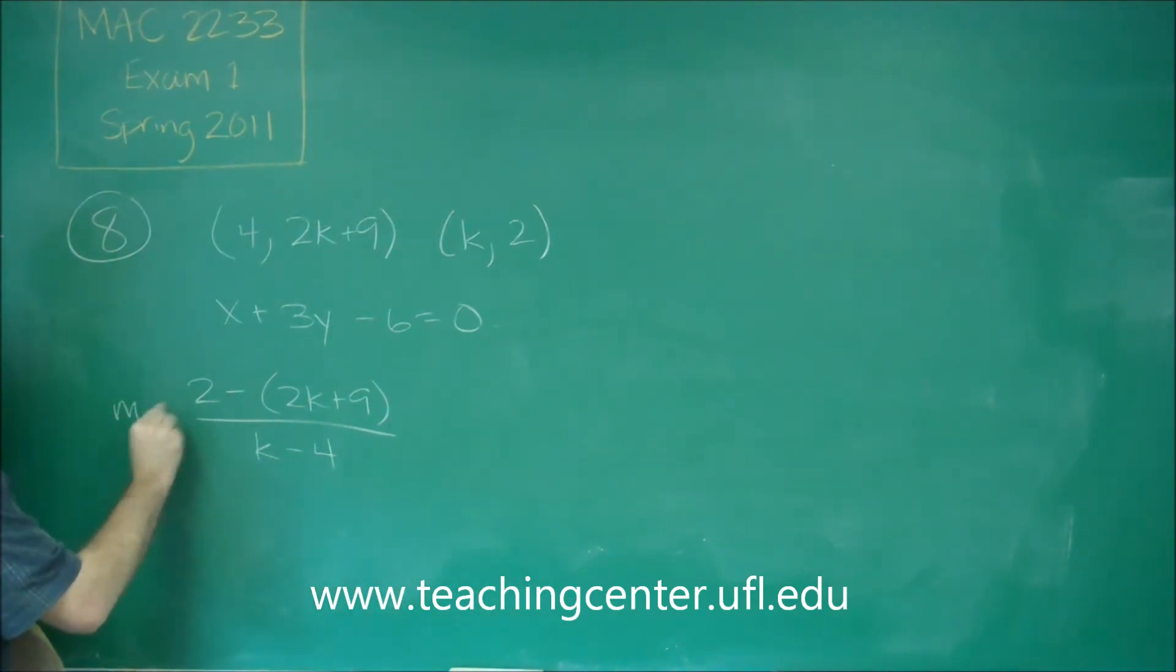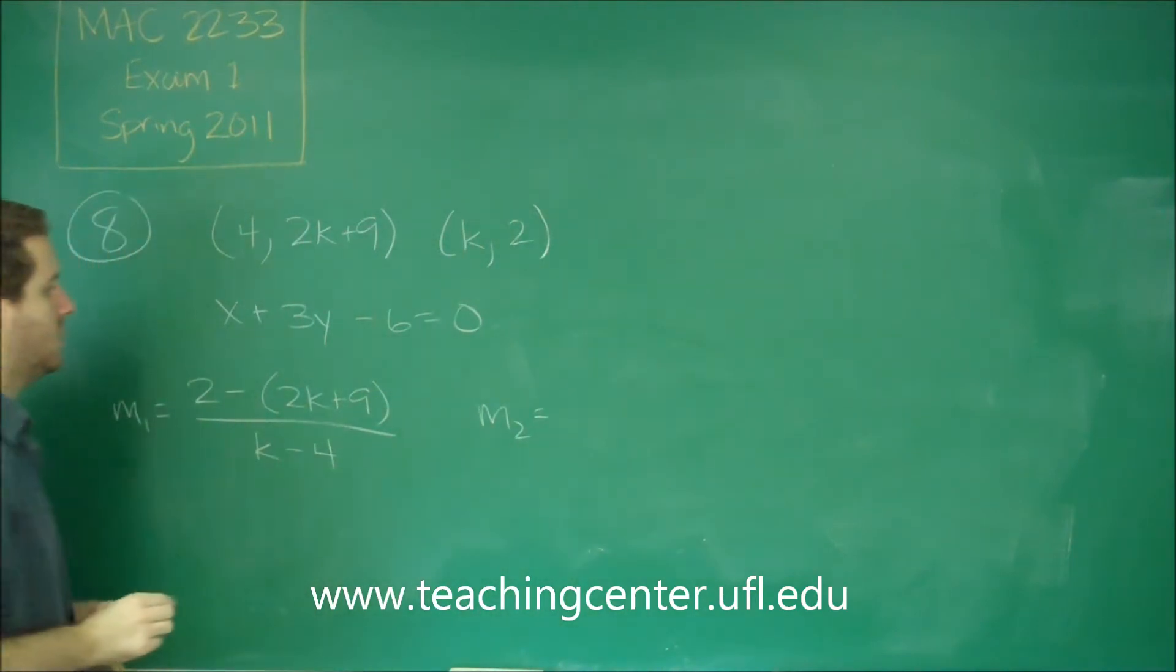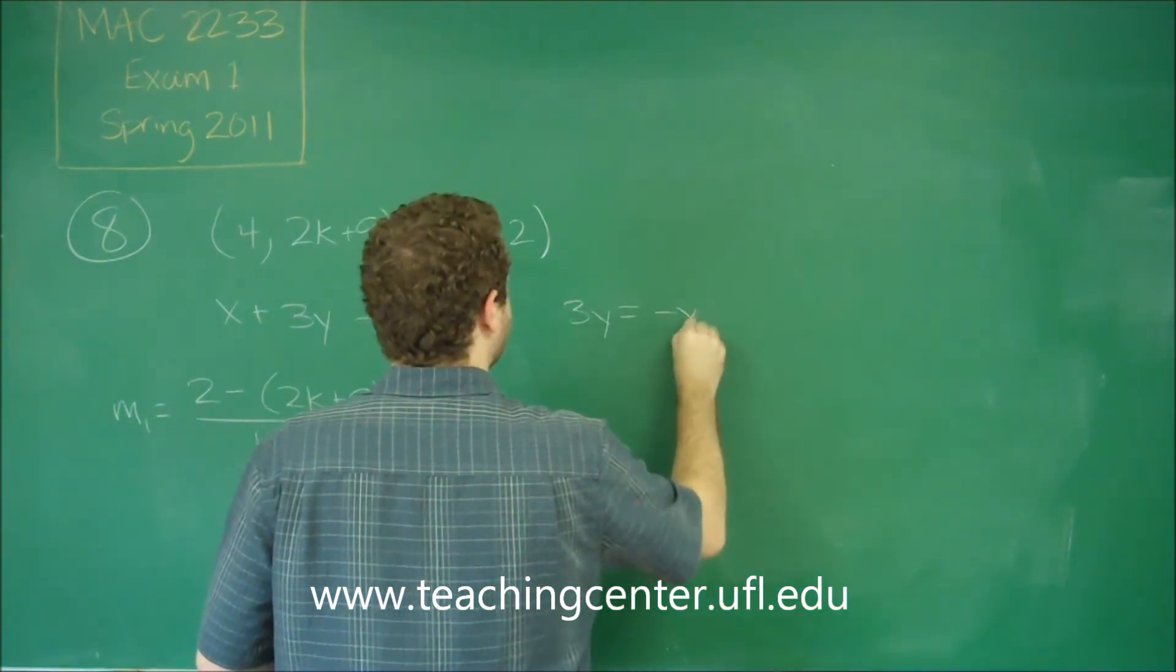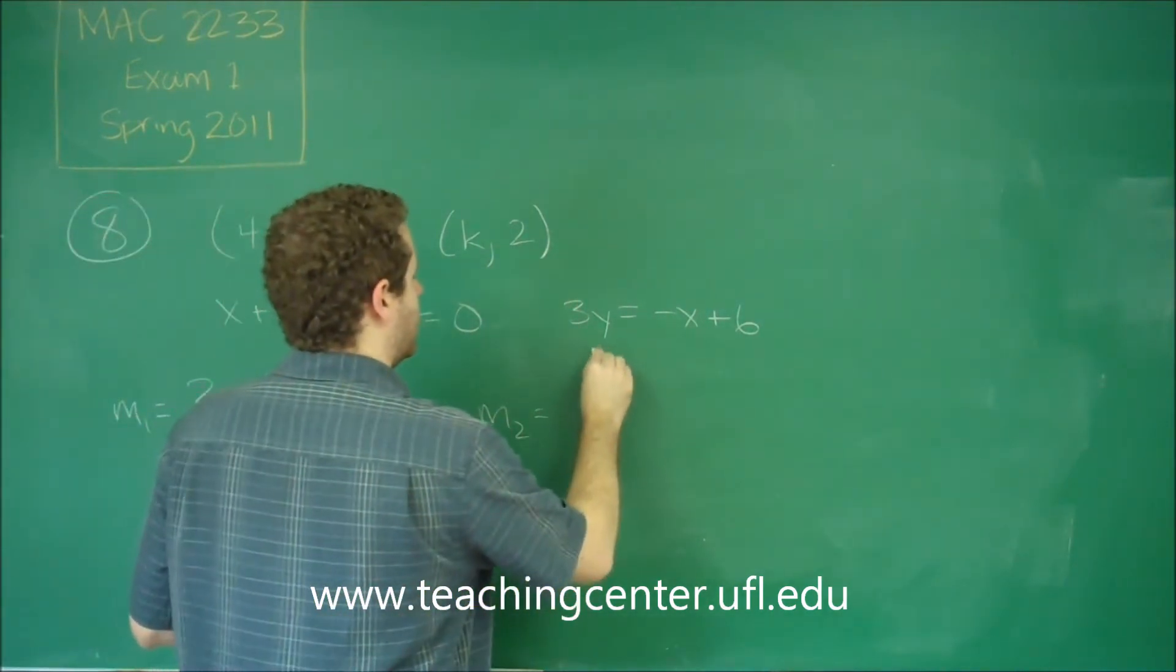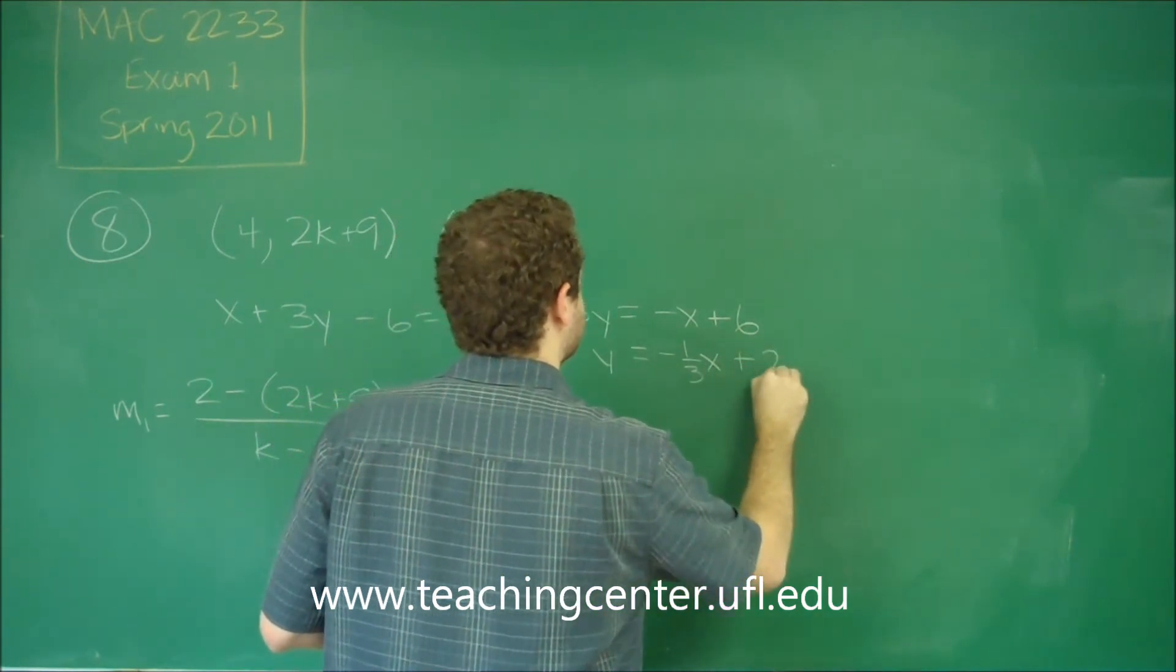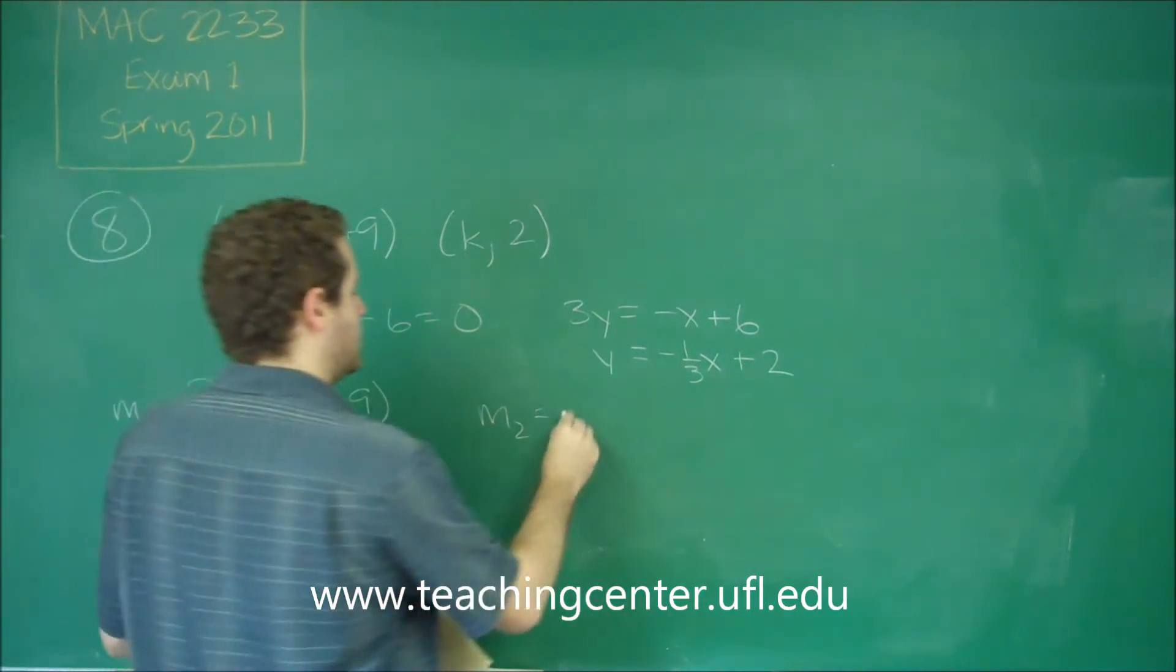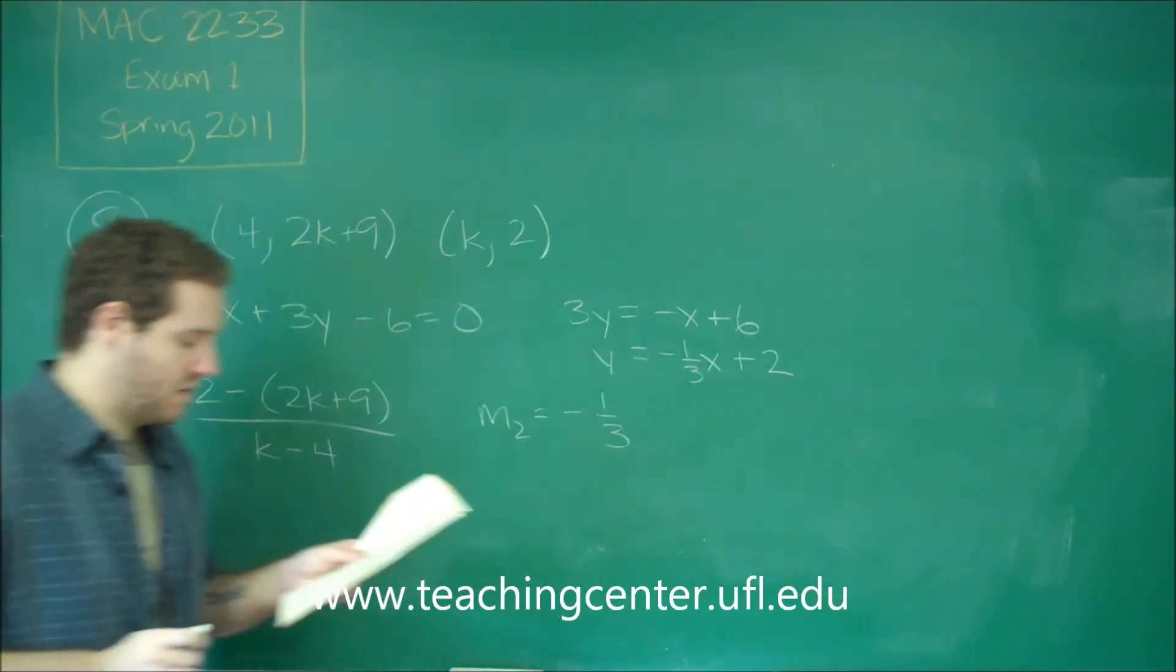Let's call this M1. M2 we can figure out by putting this into Y = MX + B form. In rearranging this, we'll get 3Y = -X + 6, and if you divide there you get Y = -1/3 X + 2. Now our line is in Y = MX + B form. You can easily see that M2 is -1/3. That's the slope of our line here.